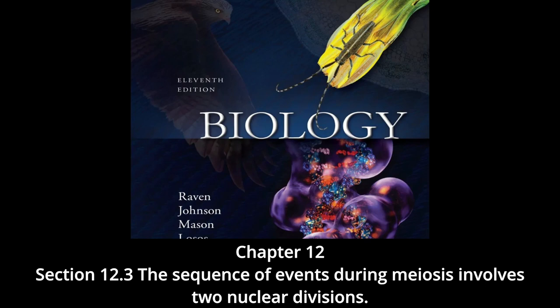At the end of meiosis two, each of the four haploid cells contains one copy of every chromosome rather than two. Because of crossing over, no two cells are the same. These haploid cells may develop directly into gametes, as in animals, or they may divide by mitosis, as in plants, fungi, and many protists.